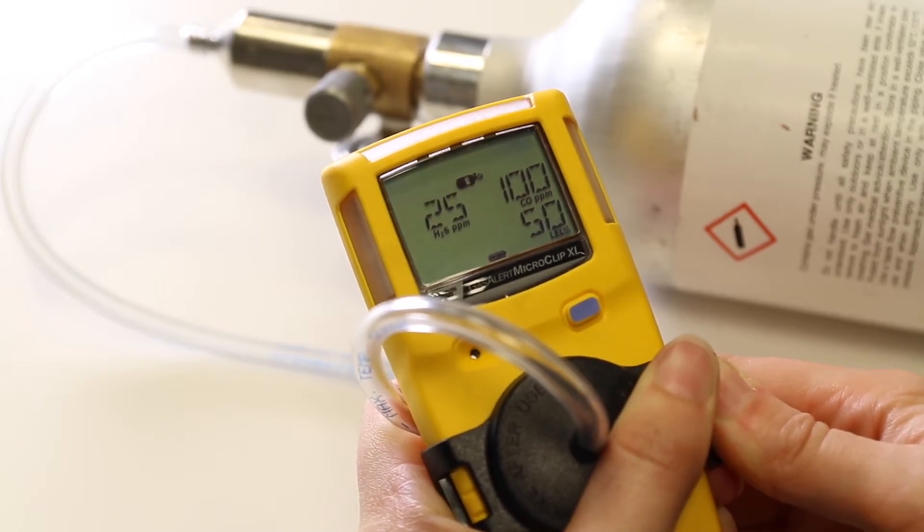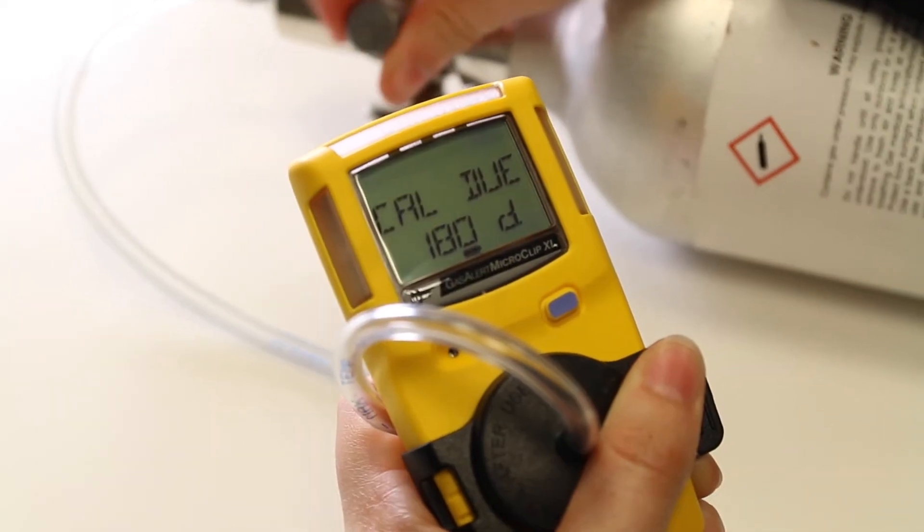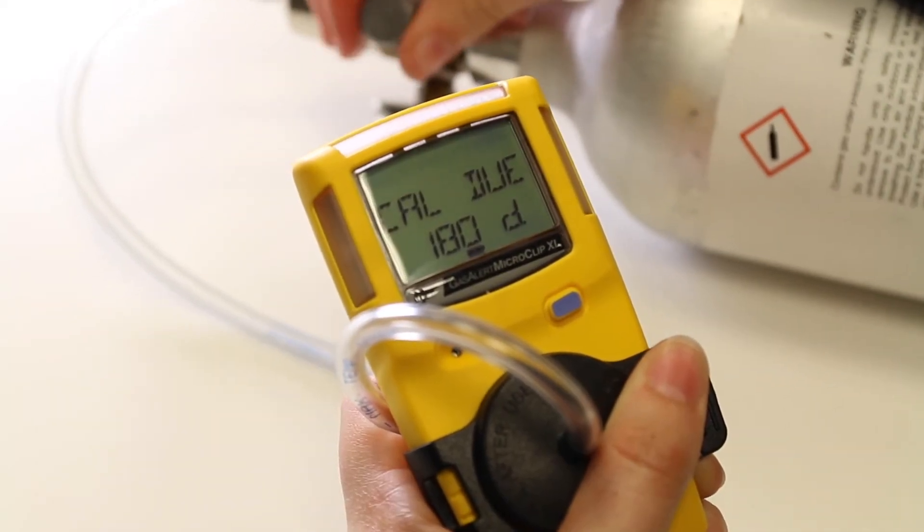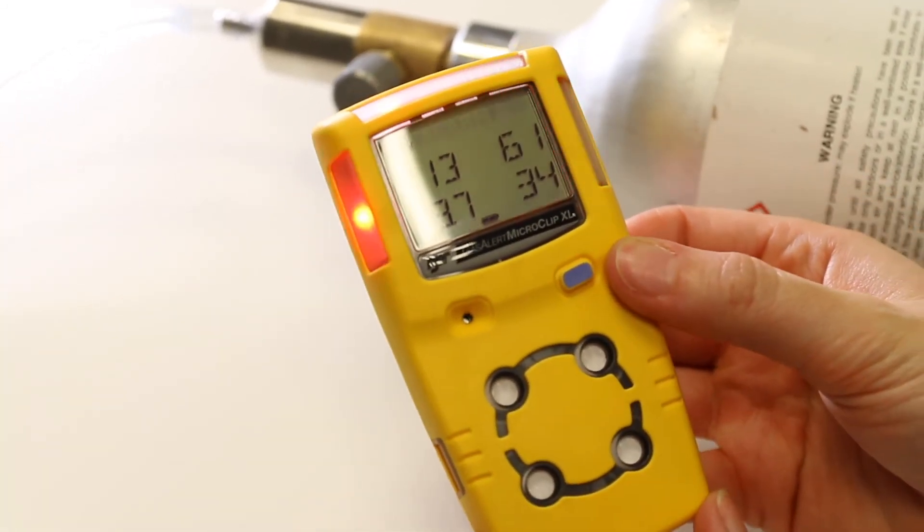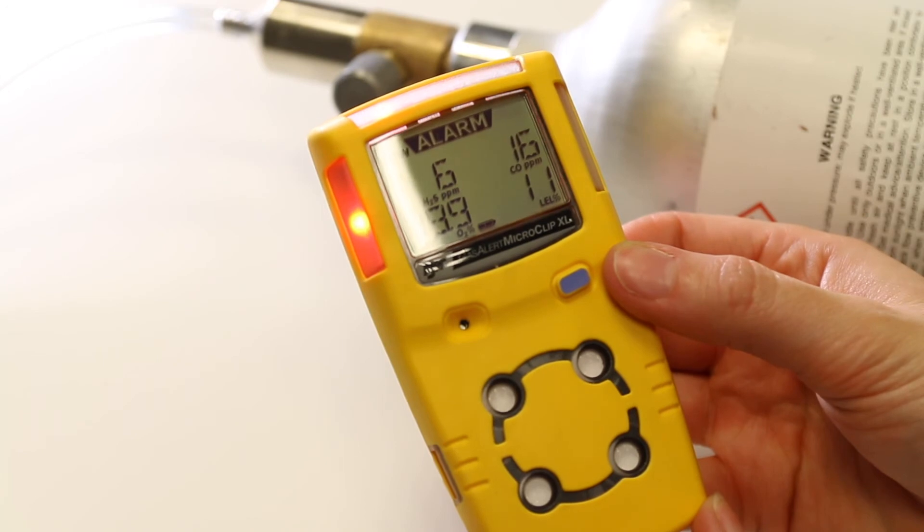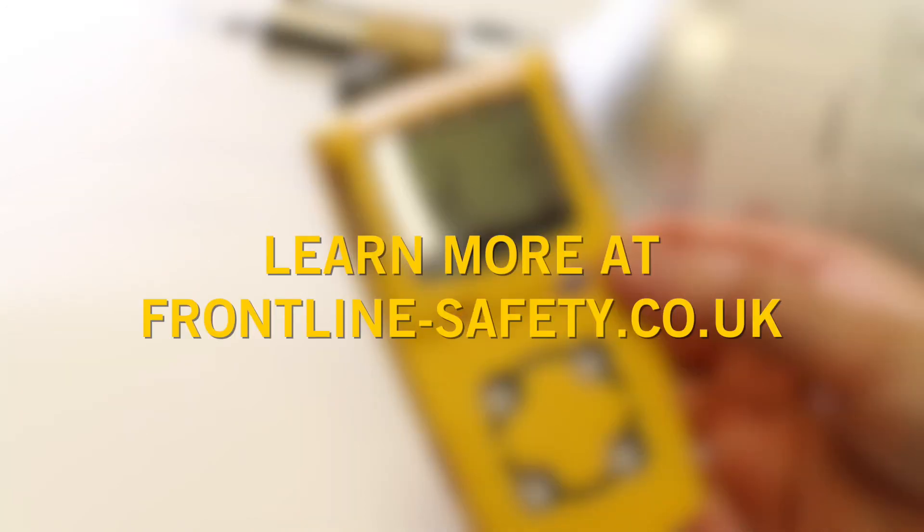You can now close the regulator and remove the calibration cap from the monitor. It may take a few seconds for the gas to clear from the sensors and for the alarms to stop. For more information on maintaining gas detectors, visit our website frontline-safety.co.uk.